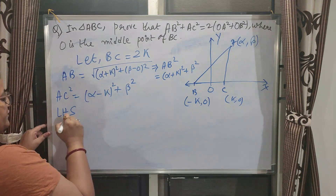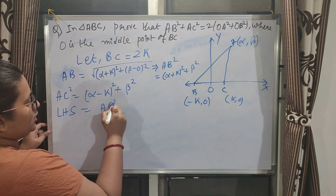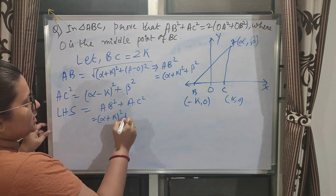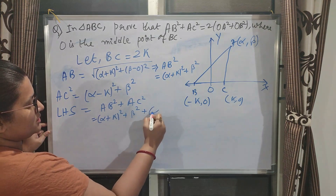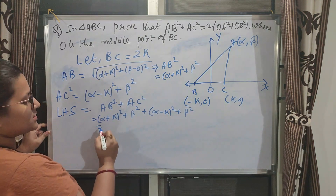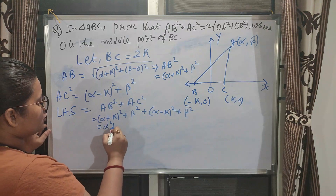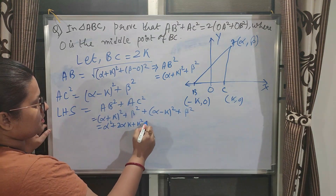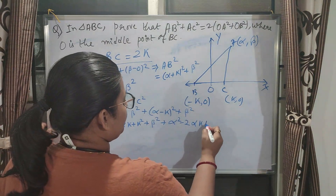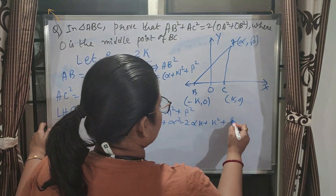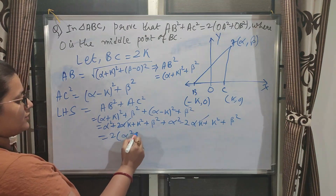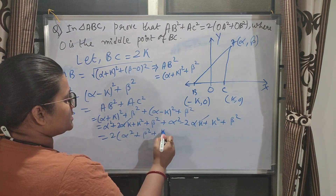Now calculating LHS = AB² + AC² = (α + k)² + β² + (α - k)² + β². Expanding: α² + 2αk + k² + β² + α² - 2αk + k² + β². The 2αk terms cancel, giving LHS = 2(α² + β² + k²).